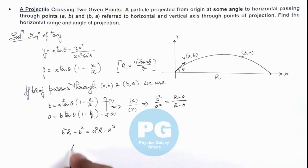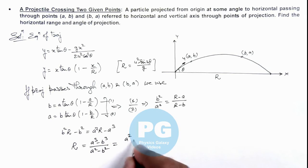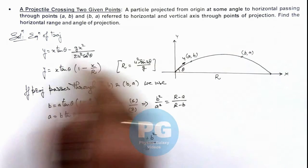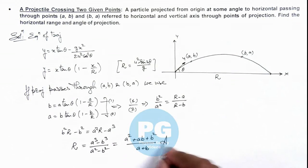Or the range of projectile we are getting here is a cubed minus b cubed divided by a squared minus b squared, which if we further simplify will give us a squared plus ab plus b squared divided by a plus b. So one thing we are required to find, the horizontal range, for which this is the answer.